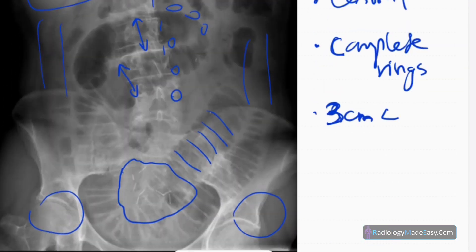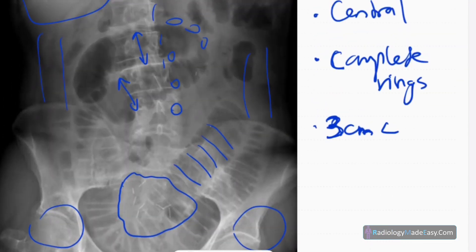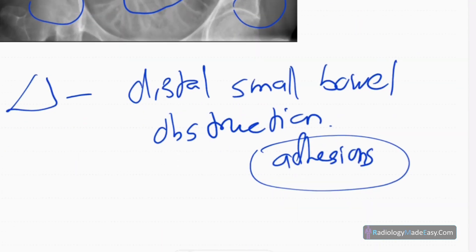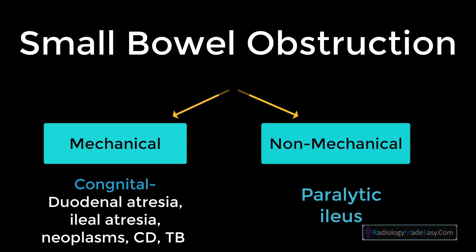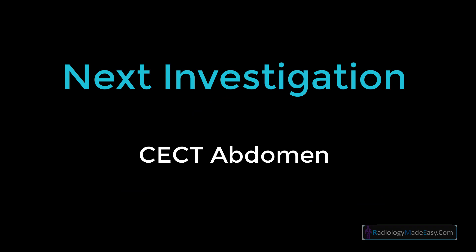In small bowel obstruction, there are centrally dilated bowel loops with complete rings. You need to look for the cause and complications. Small bowel obstruction can be mechanical or non-mechanical. Non-mechanical is usually due to paralytic ileus. Mechanical causes in adults include neoplasms, Crohn's disease, and infections like tuberculosis at the ileocecal junction. The next investigation is a contrast-enhanced CT of the abdomen. That concludes case number one in the abdomen series.